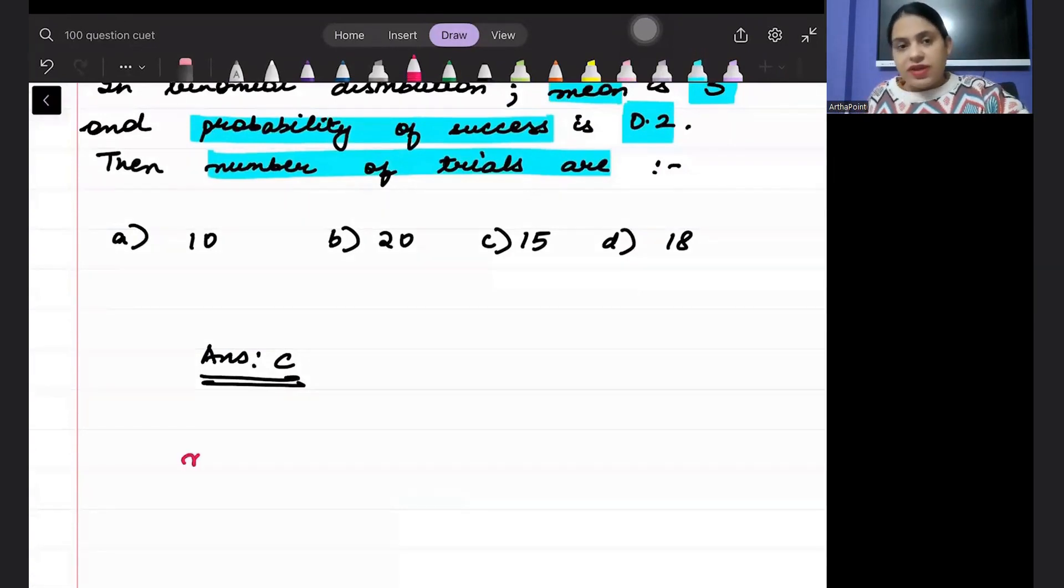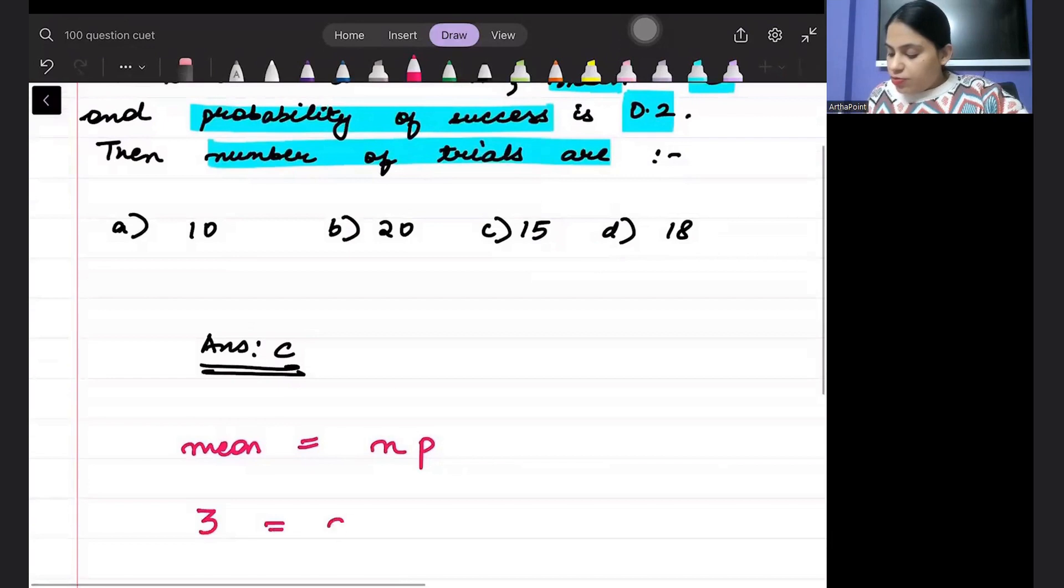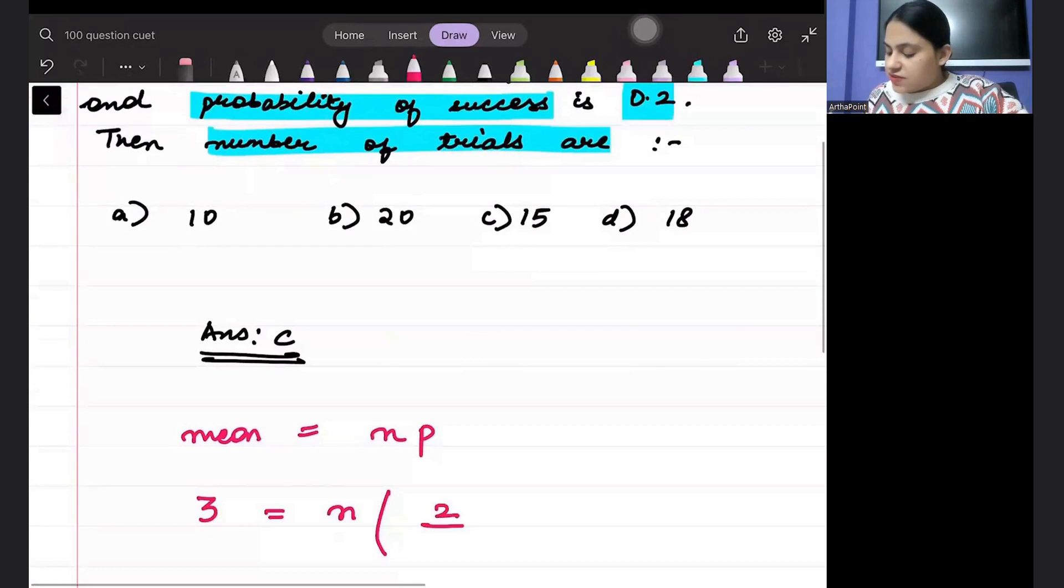What is the mean value? How do we represent the mean value? It is n into p. Mean is given to us as 3 and probability of success is given as 2 by 10, 0.2.